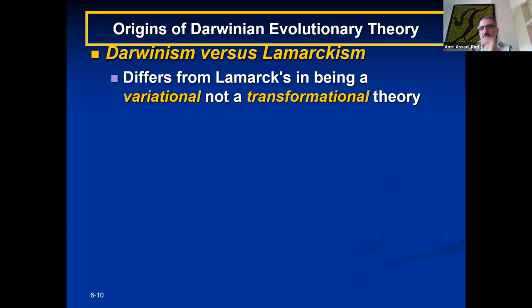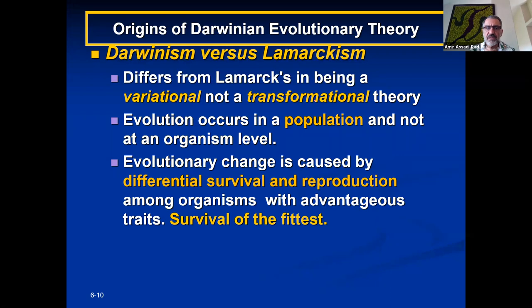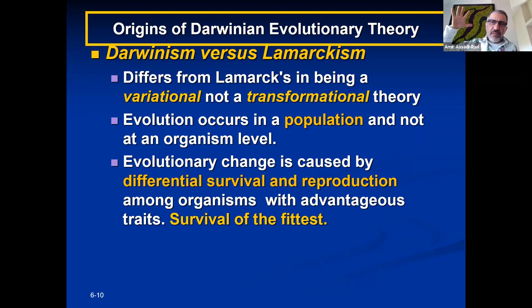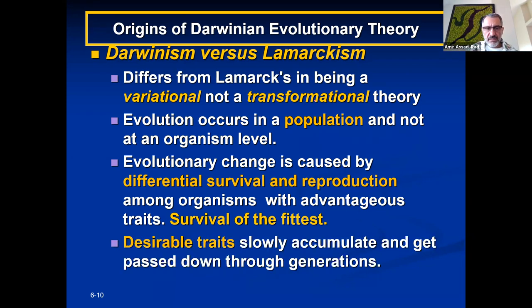Darwin said it's variation and Lamarck said it's transformation. Evolution occurs in populations. Evolution changes are caused by differential survival and reproduction among organisms with advantageous traits — survival of the fittest. The fittest survived; those without long necks died. But the ones with long necks transmitted their genes to the next generation, and most likely those genes also coded for long necks. So desirable traits accumulated and got passed on to the next generation.